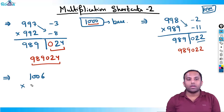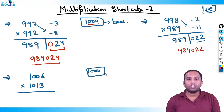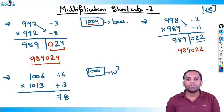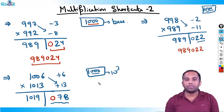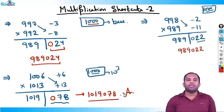One more: 1006 into 1013. Both are close to base 1000. Difference is plus 6 and plus 13. 13 into 6 is 78 — that is the right part. Cross addition: 1006 plus 13 is 1019. I need three digits in the right part, so I put one zero to make 078. Attaching both parts, the answer is 1019078.